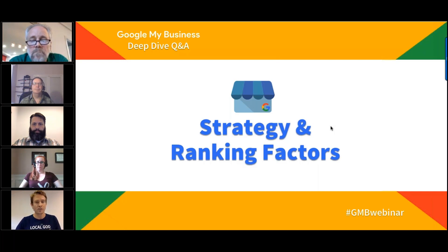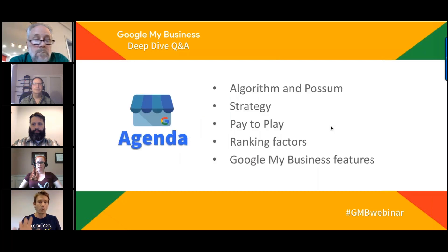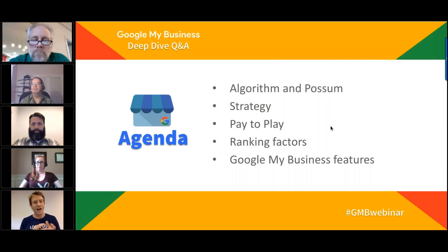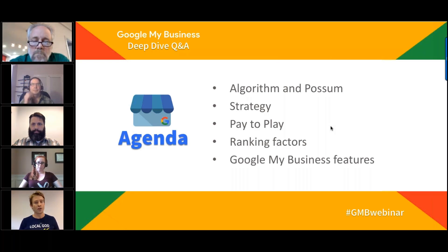We have a lot to get through. We actually had over 120 questions for today's webinar. Thank you very much to everyone who submitted their questions. We've grouped them into a five-part agenda: first, questions relating to the algorithm and the POSSUM update; then strategy for GMB; then pay-to-play issues around Google My Business and Google Maps; then ranking factors and what's changing; and finally the more advanced Google My Business features.